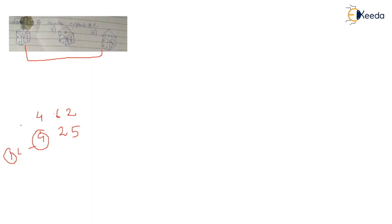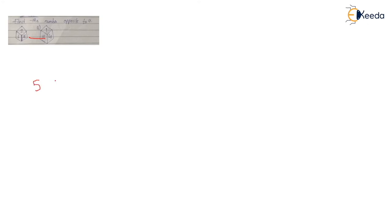Let's see the next question: find the number opposite to four. Here you can see the common number is five. Moving clockwise: five, six, two — and similarly clockwise: five, one, four. What can be opposite of five? Three. But they ask what is opposite of four — so four is opposite of two. That is the answer.